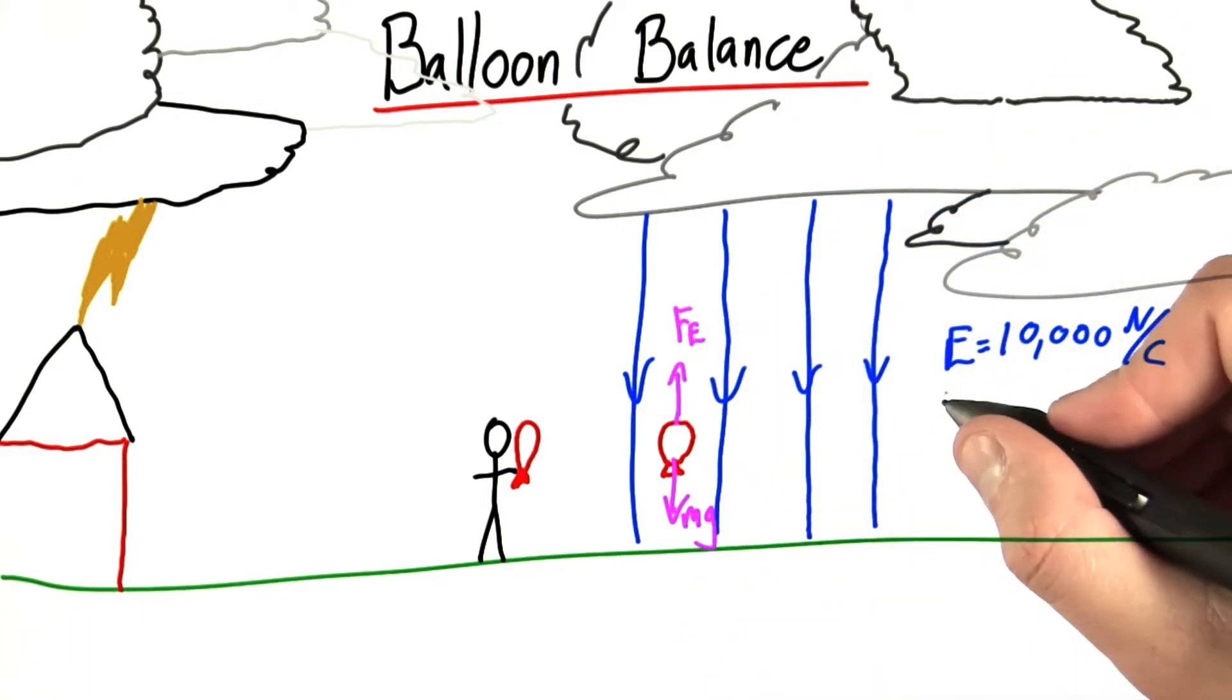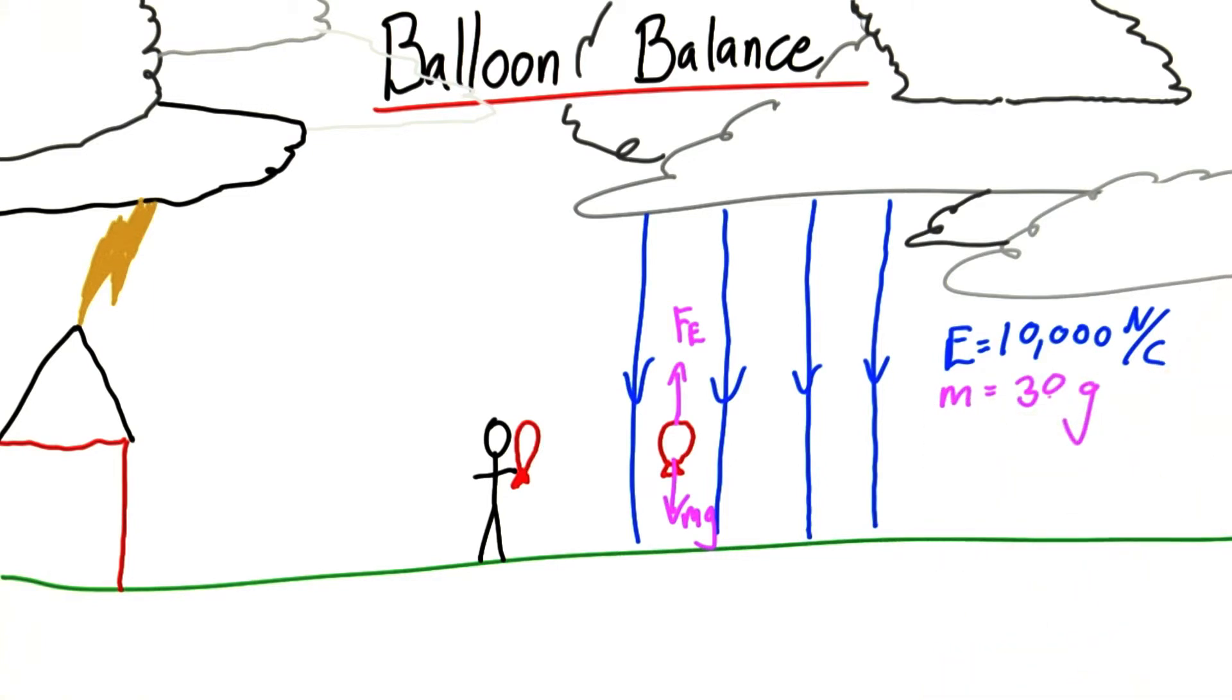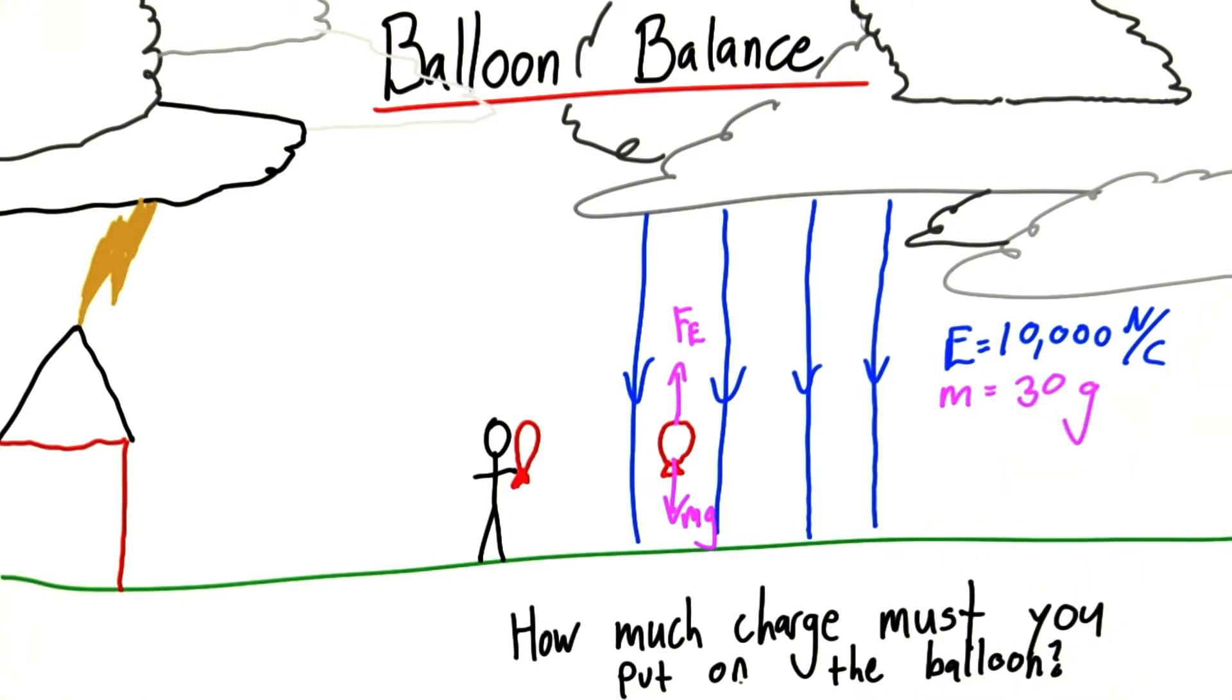If we know that the weight of the balloon, or I should say the mass of the balloon, is 30 grams, how much charge must you put on the balloon to have it balanced perfectly in this electric field?